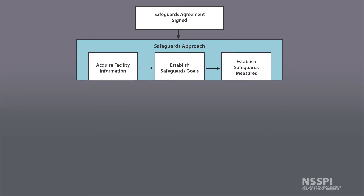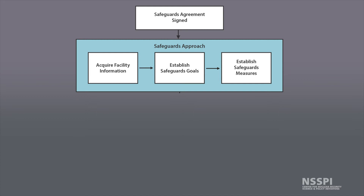The safeguards approach begins with the signing of a safeguards agreement between the IAEA and the state seeking safeguards. The approach then involves the acquisition of facility information for the facility to be safeguarded. The IAEA will then establish different safeguards goals for that specific facility and within the specific state, and then establish the safeguards measures to be implemented at that facility.